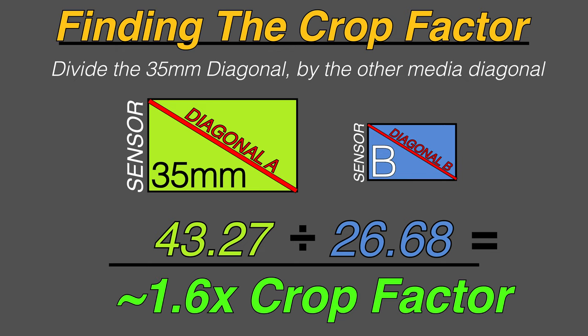So 43.27, the diagonal of the 35 millimeter, divided by 26.68, the diagonal of the Canon APS-C, that gives us about 1.6. So that is how you calculate the equivalent crop factor for any media that you're shooting with.